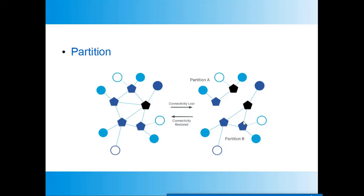The Thread network is formed by many partitions. A partition is governed by a leader router elected by other routers in the partition. A partition is a cluster of routers not communicating with another cluster. If one cluster manages to communicate with another, both merge to form a single partition with a single leader. In the image shown, when connectivity is lost, the network splits into two partitions, each with its own leader router.